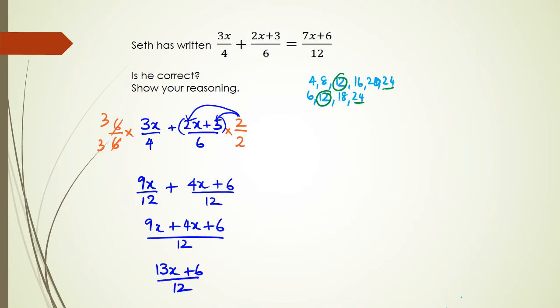And if you look at the answer that Seth has actually written, Seth has written 12, 6, but he hasn't actually got the coefficient of x correct. So you basically say, no, he's not correct. Or no, he is incorrect.